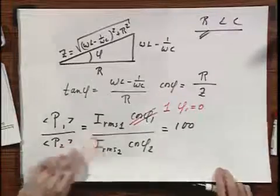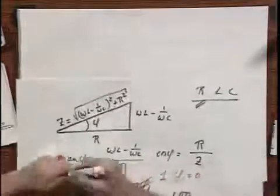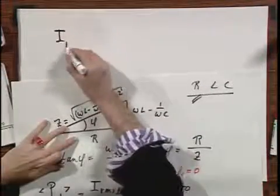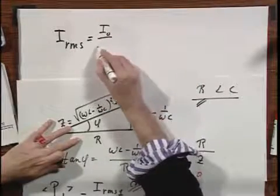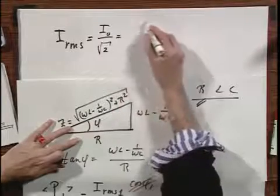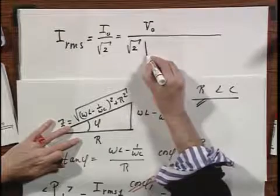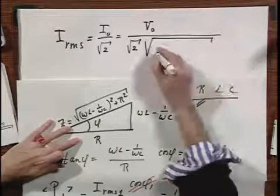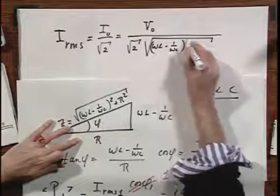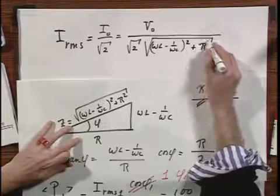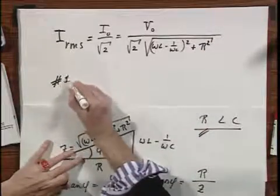Let's write down now what I RMS is in general for an RLC circuit. It is I0 divided by the square root of 2. And that would be V0 divided by the square root of 2 times that value for Z. Let me write that in, omega L minus 1 over omega C squared plus R squared. And you have seen this many times before.